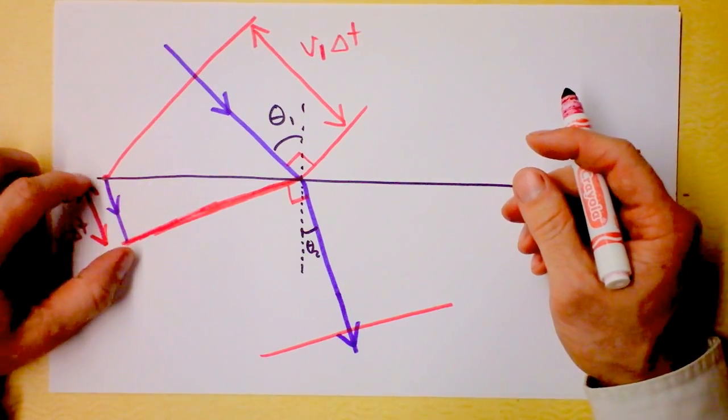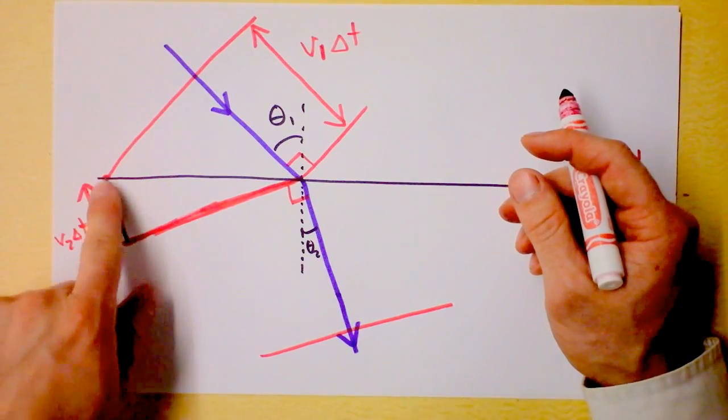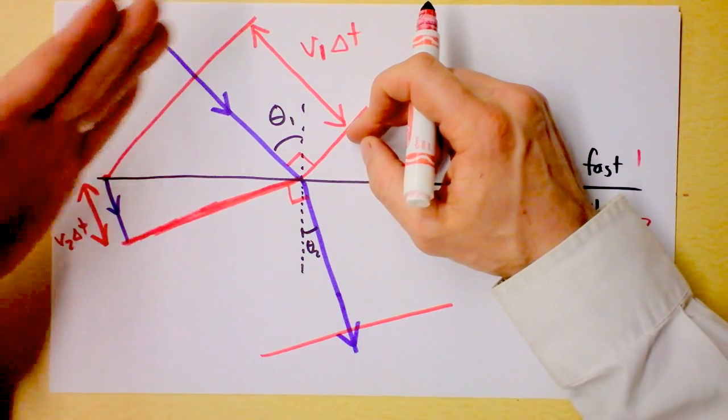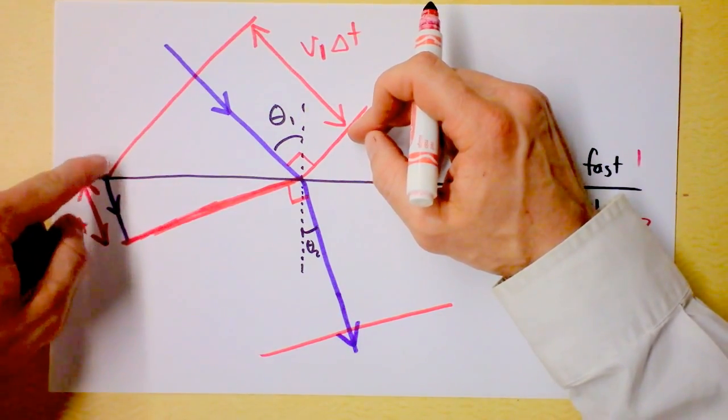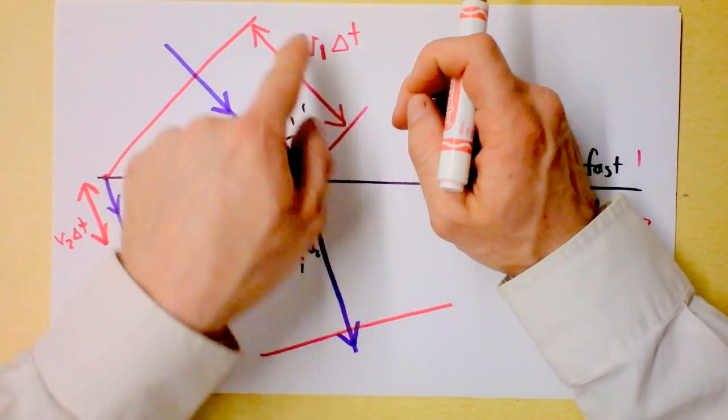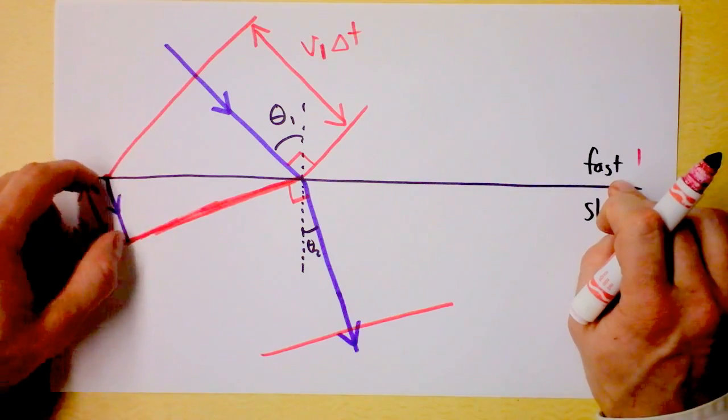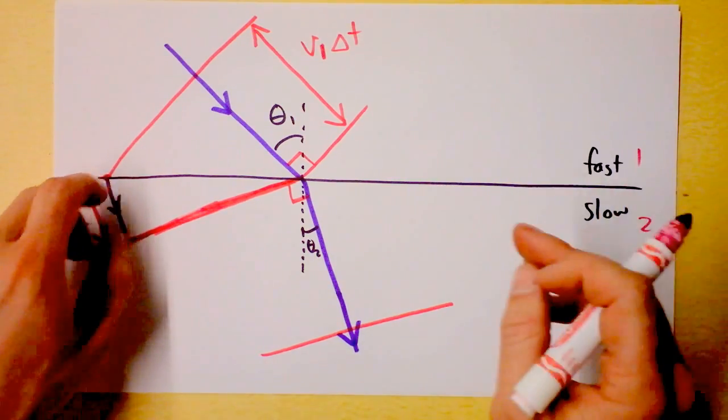Do you see how this triangle has a leg at V2 delta T? And this triangle has a leg at V1 delta T? During the same amount of time, whereas this guy would have gone this far had he been out in the fast region. Because he's in the slow region, he's only gone that far, because he's in a swampy, slow region.